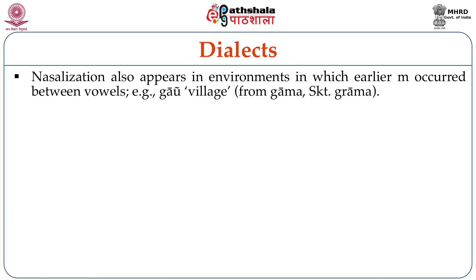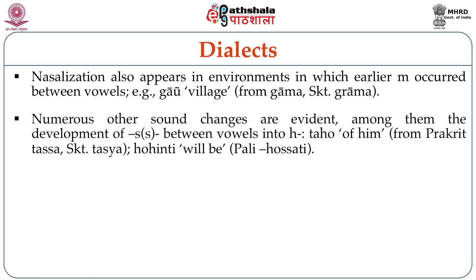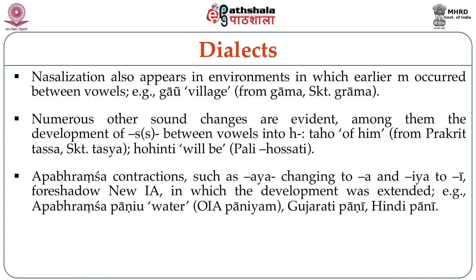From stems in aayye, developed forms in AU and nasalized AU. For instance, bhadarau (Honored One/King) from Prakrta bhattarayo; and hau (I) from Ashokan hukam. Nasalization also appears in environments in which earlier M occurred between vowels — for example, gaun (village) from gramma or gama (Prakrta and Sanskrit gramma). Among numerous other sound changes is the development of SA — either geminated or non-geminated — between vowels into H. So taho (of him) from Prakrta tassa; Sanskrit tasya. Similarly, hohinti (will be), whose Pali form is hossati.